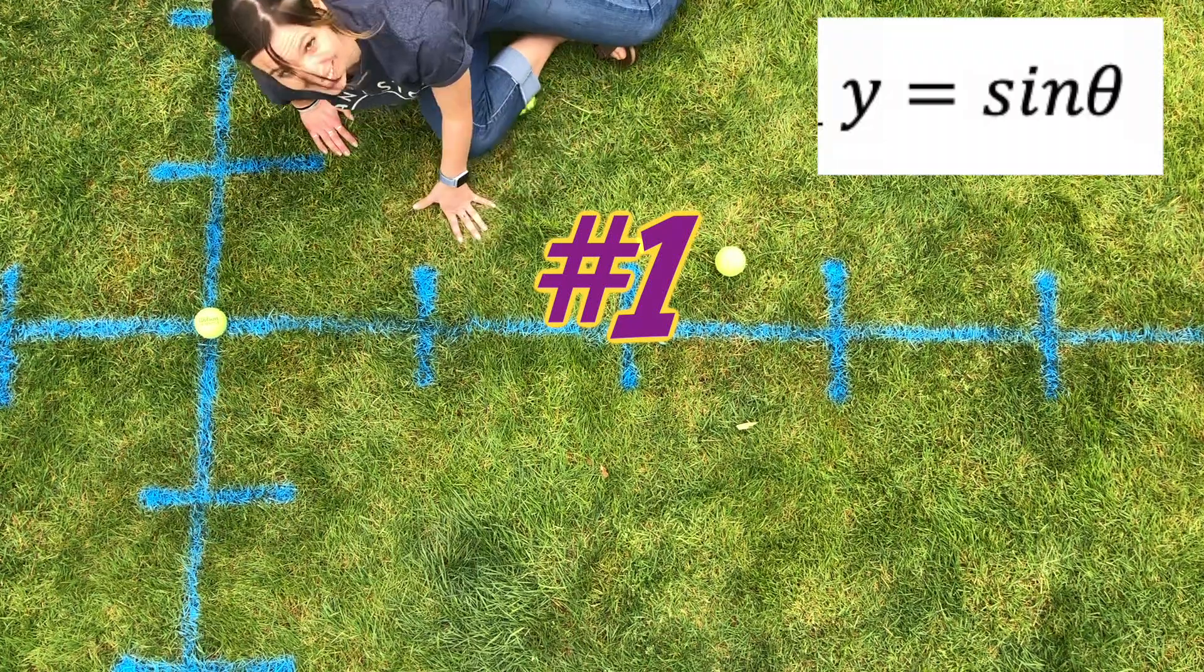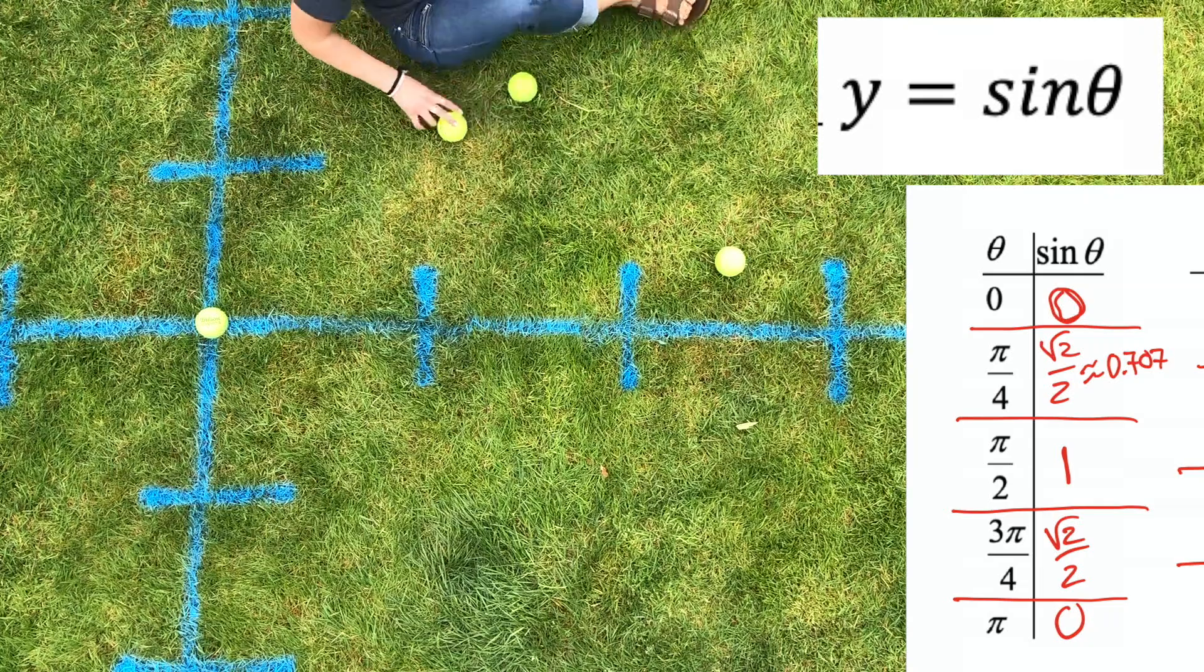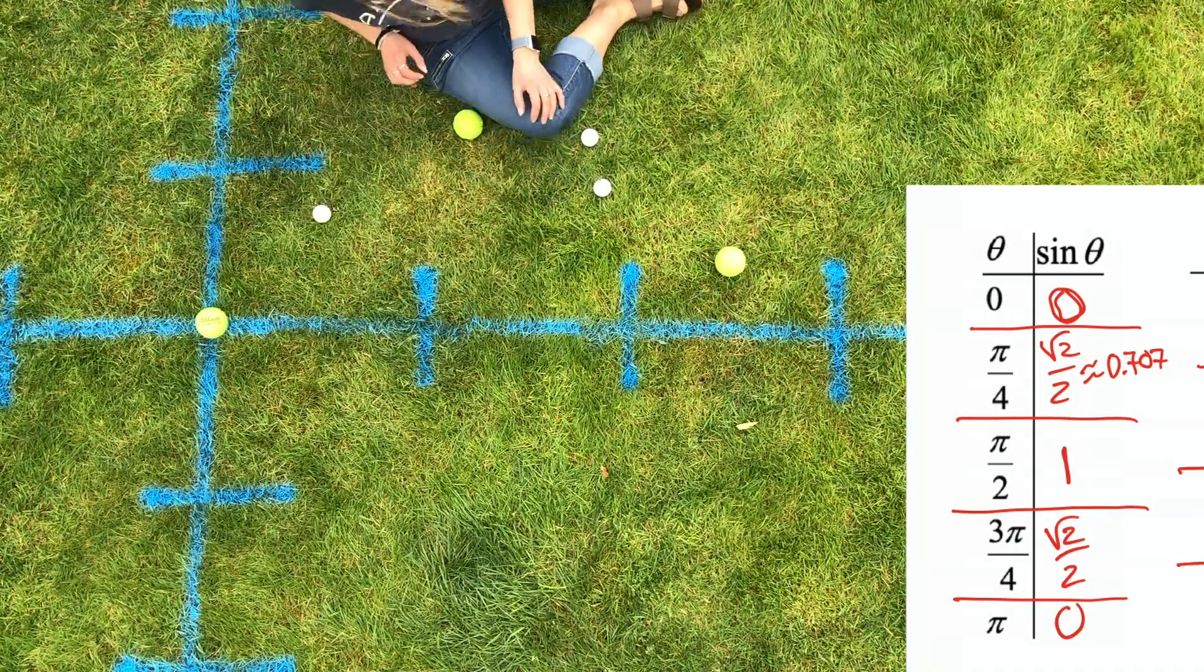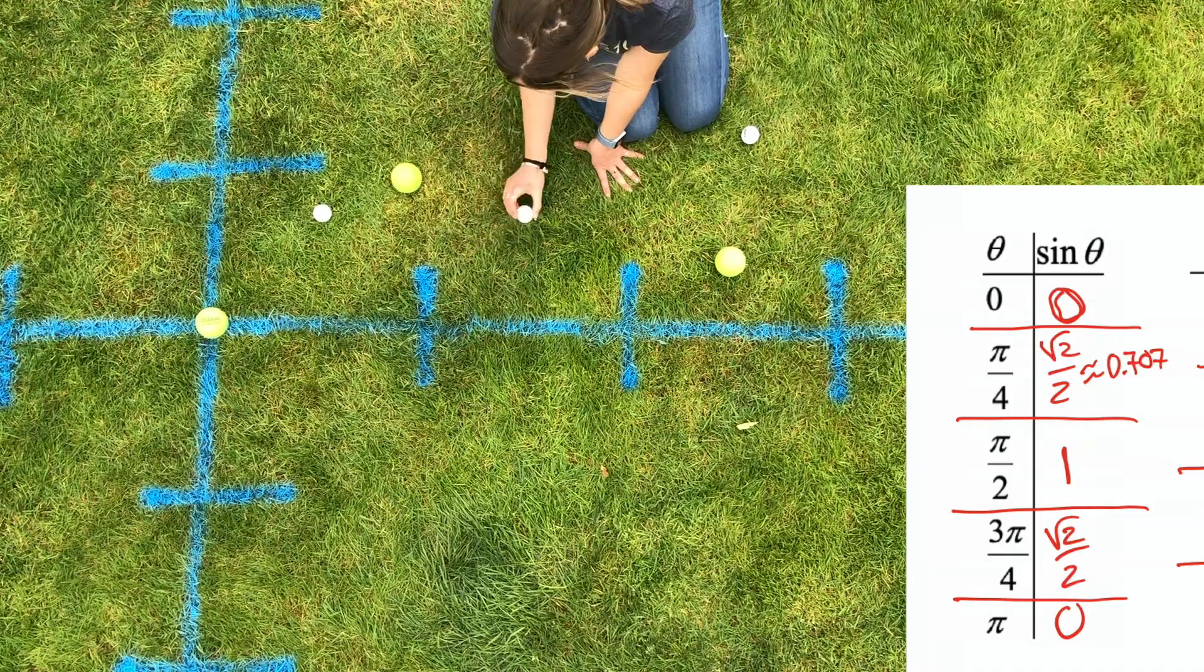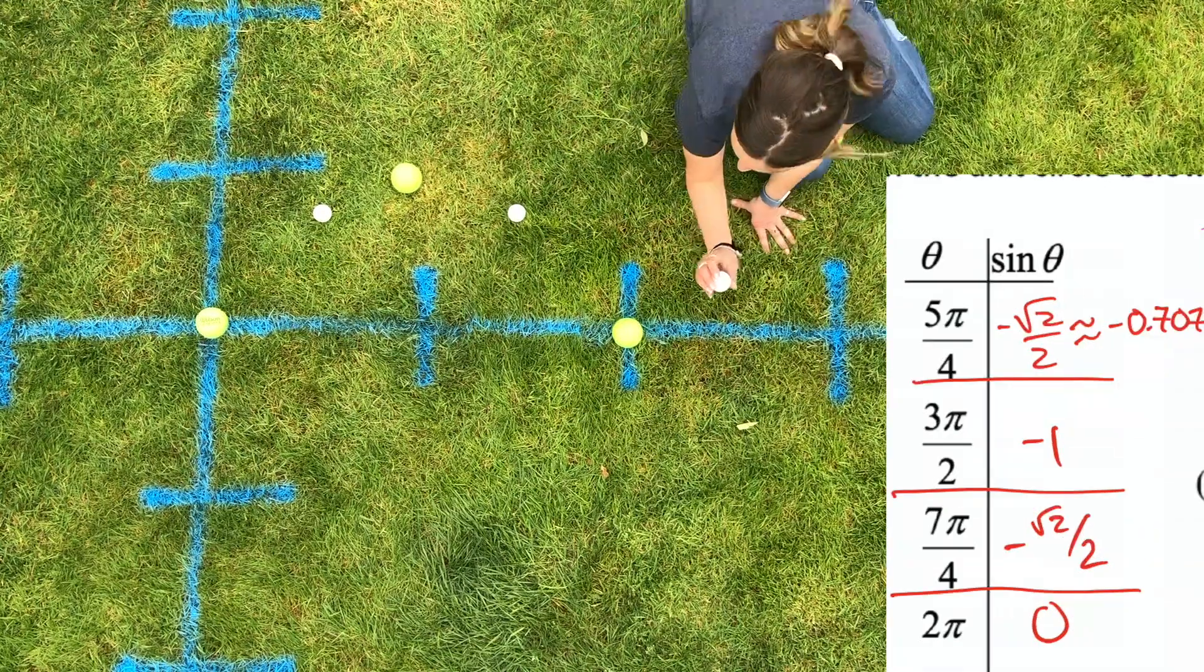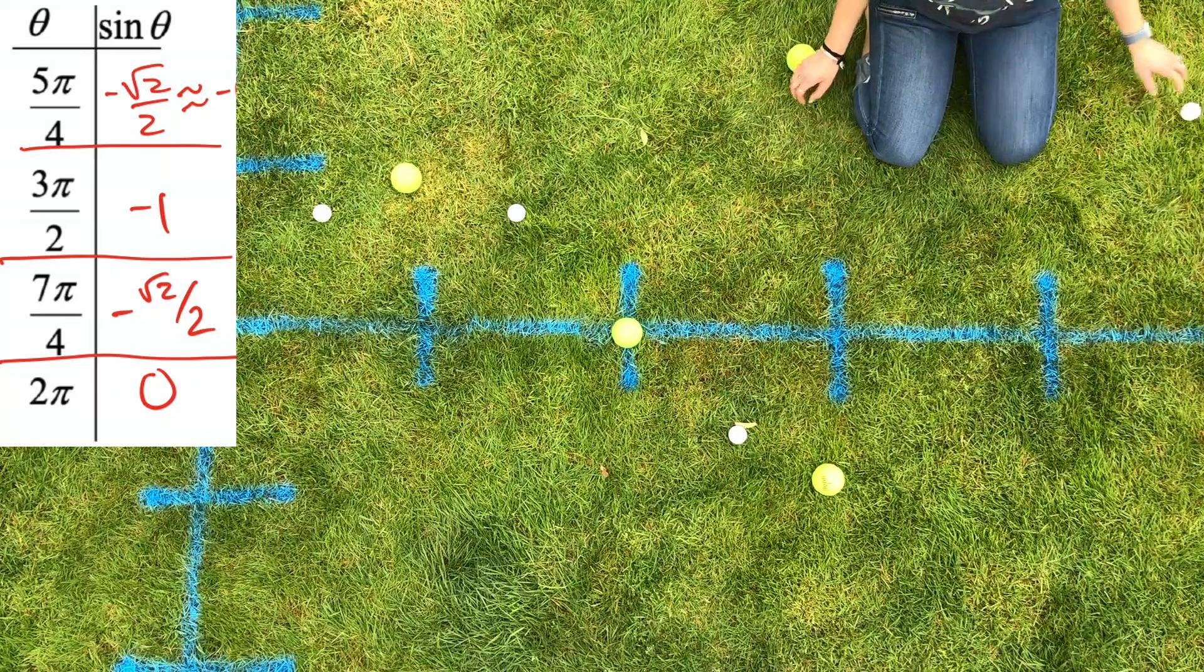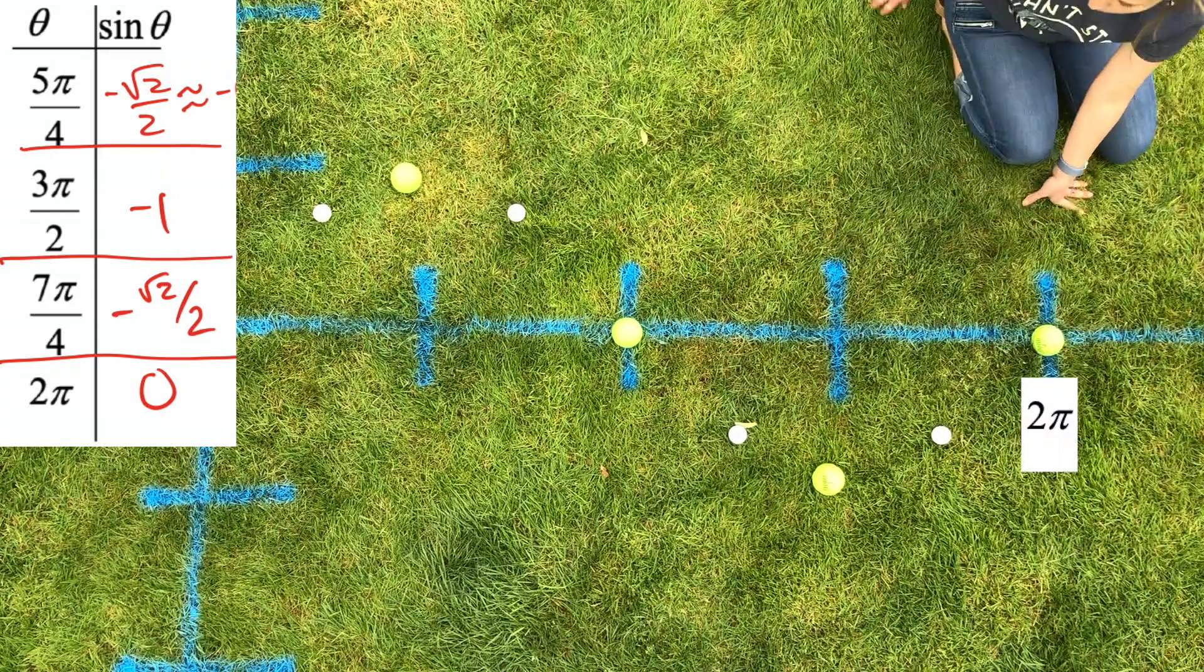Alright, so I want to graph sine of theta. Well, sine of zero is zero. So then sine of pi over four, I wish I had something for my pi over fours. Oh, that works. Okay, so sine of pi over four is root two over two, which is about 0.707. So we could put that right about there. Okay, and then sine of pi over two is one. Sine of three pi over four is 0.7. Sine of pi is zero. Sine of five pi over four is negative root two over two, which is about negative 0.7. Okay, sine of three pi over two is negative one. Sine of seven pi over four is negative root two over two, and then two pi, zero.